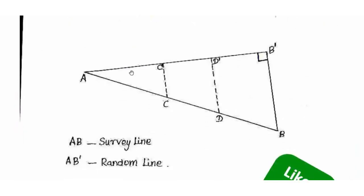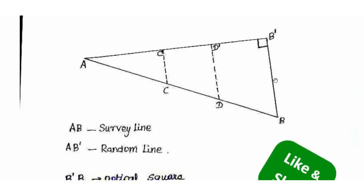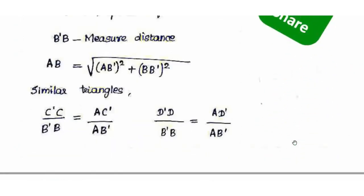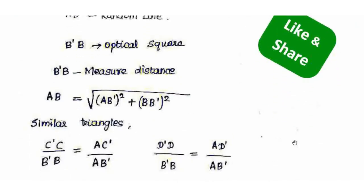When A and B are not visible due to thick vegetation, we use Random Line Ranging. Choose a random clear line from A avoiding the vegetation, so that B is visible. We fix a right angle and measure the distances. Using the Pythagorean theorem, AB equals the square root of AB'² plus AB'².